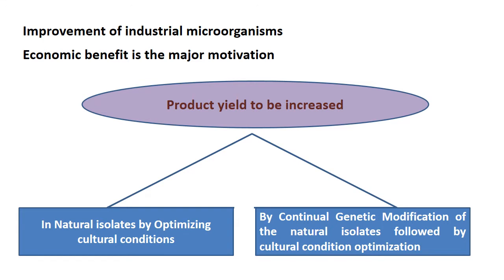In any industrial microbial fermentation, economic benefit is the major motivation. To make the fermentation economically favorable there are several concerns: we can formulate a cheap medium which will allow the microorganism to grow and produce the product at a maximum rate, use minimum energy for running the fermentation to decrease production cost, and the downstream processing should be as easy as possible. Among these various factors, the most important one is the industrial microorganism itself.